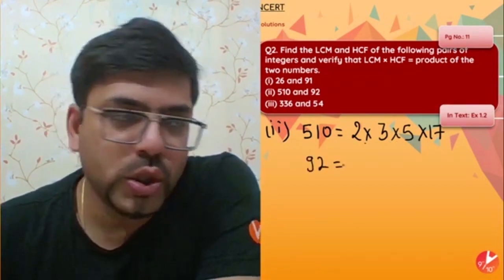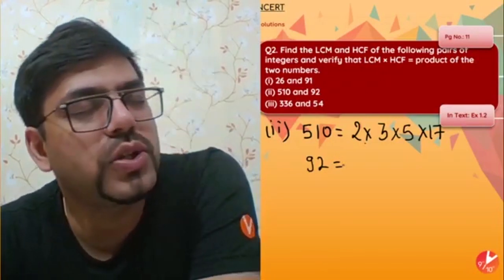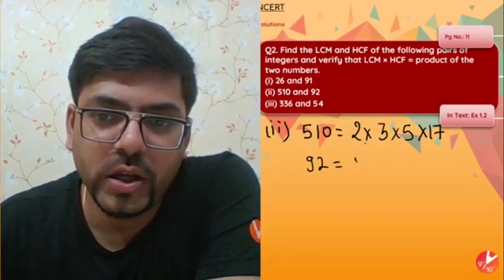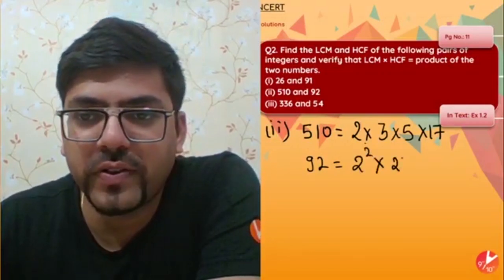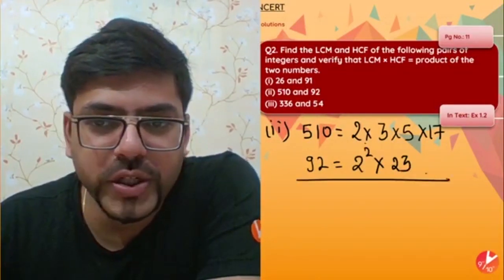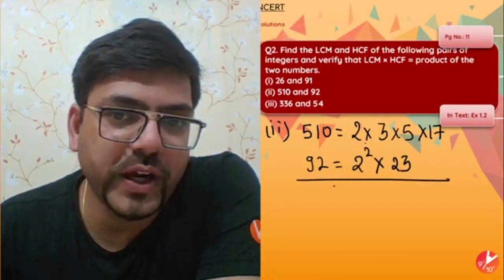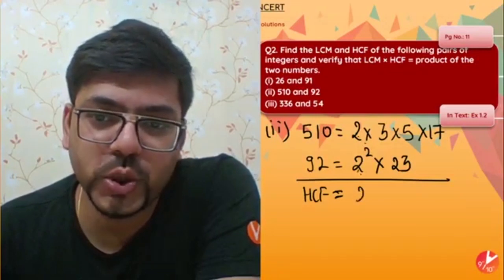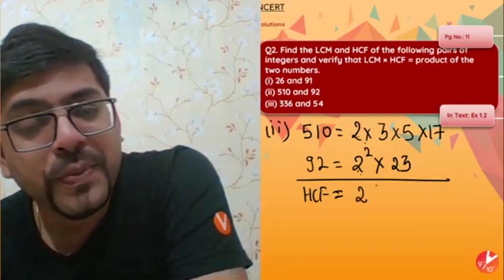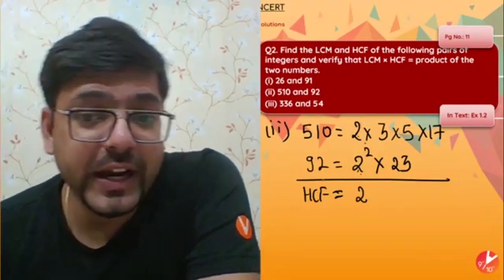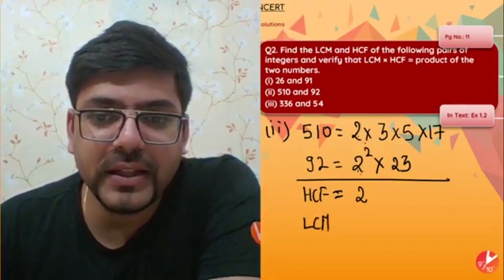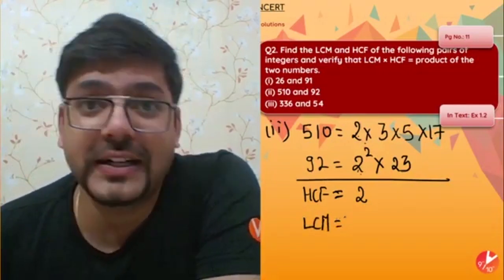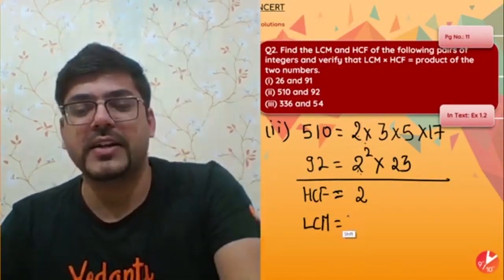Now for 92: 92 = 4 × 23 = 2² × 23. Now finding HCF — the common factor between 2 × 3 × 5 × 17 and 2² × 23. Only 2 is common, so HCF = 2. For LCM, we write all the prime factors — not just common ones, all of them: 2, 3, 5, and 17.